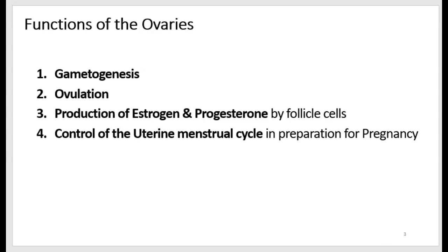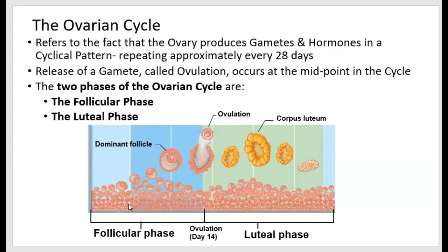The last function of the ovaries is to control the uterine-menstrual cycle. The main purpose is to prepare the uterus for pregnancy, but there's a sequence of events that occur when pregnancy does not happen. Before looking at those four functions individually, let's look at an overview of ovarian function. Ovarian function is cyclical, and so we often refer to the physiology of the ovary as the ovarian cycle.